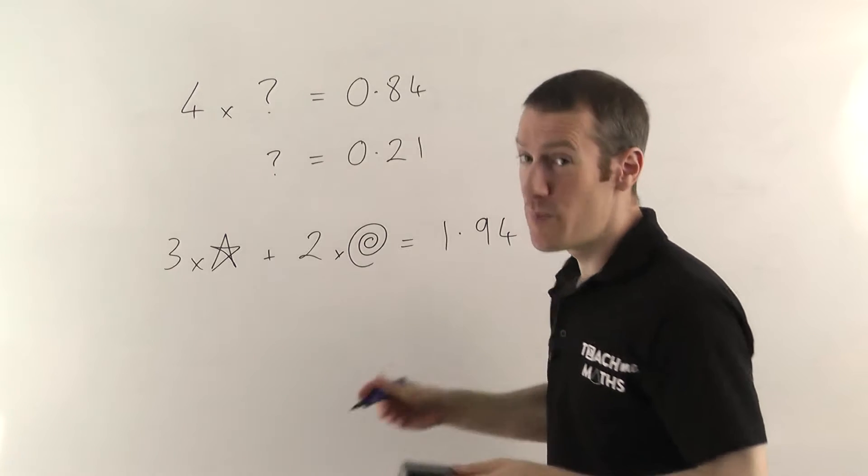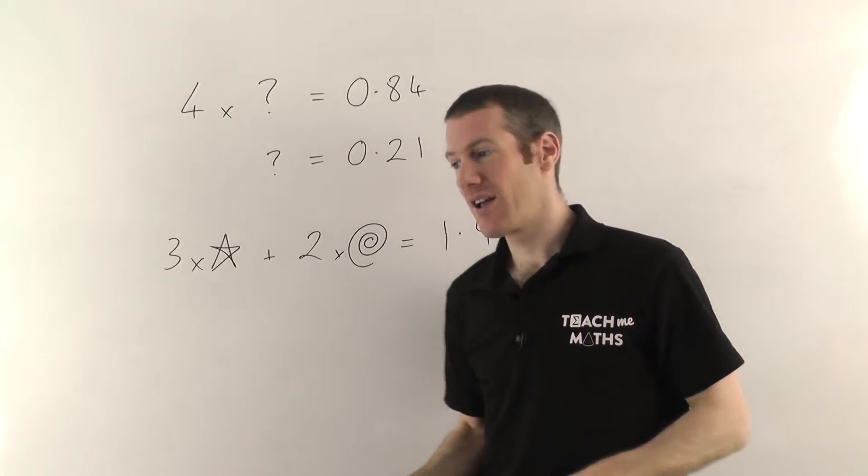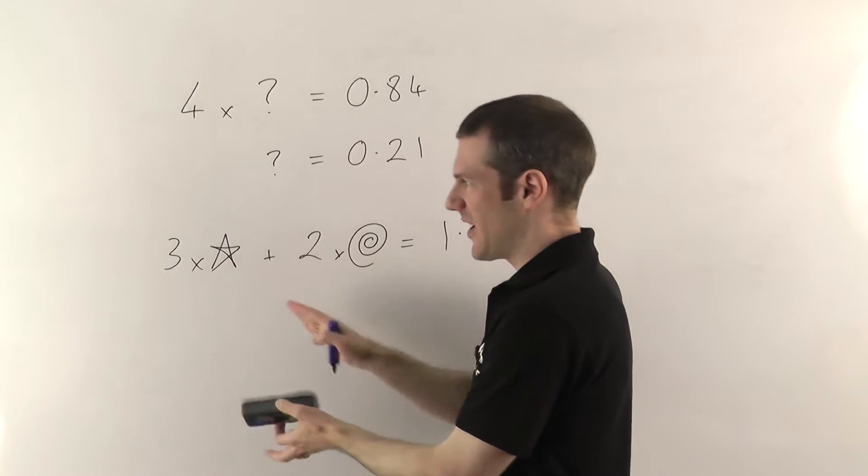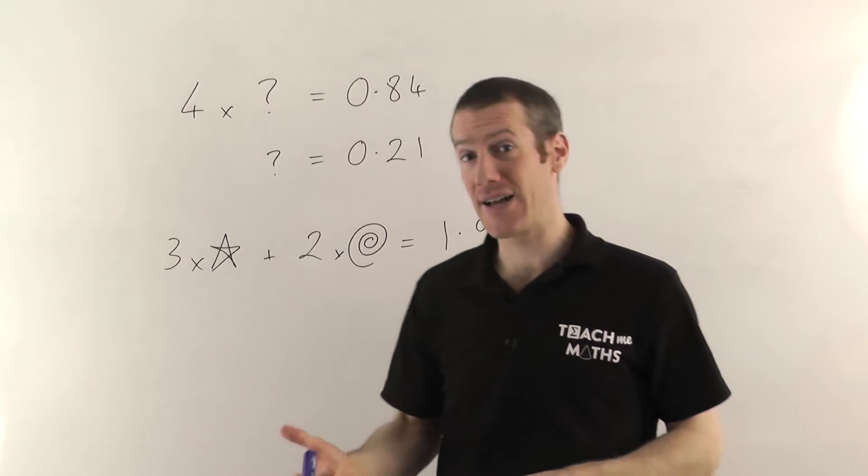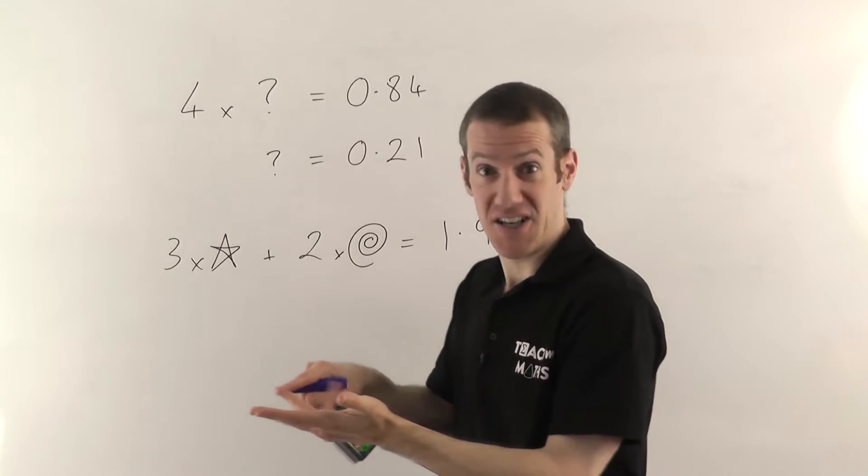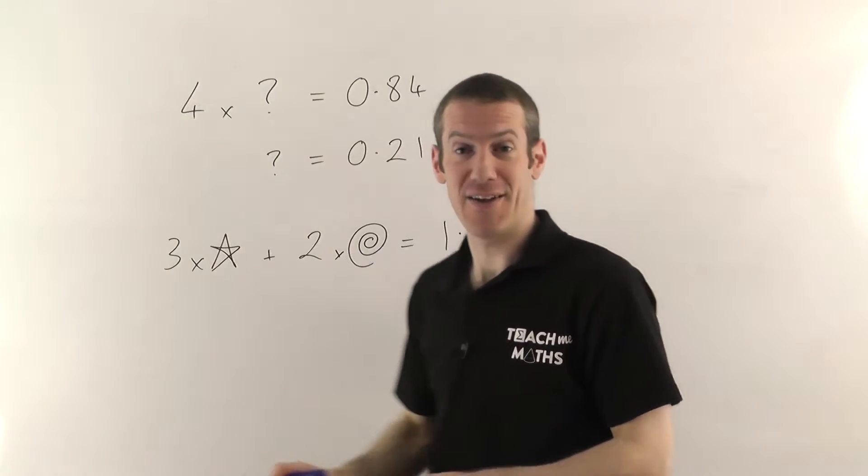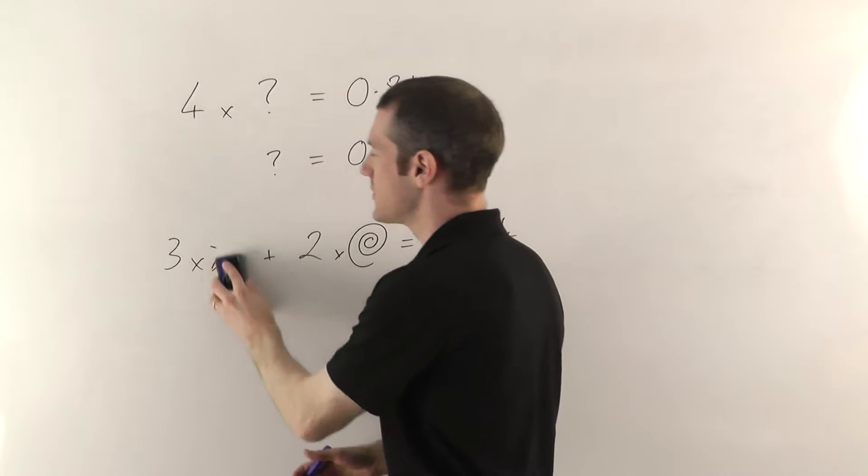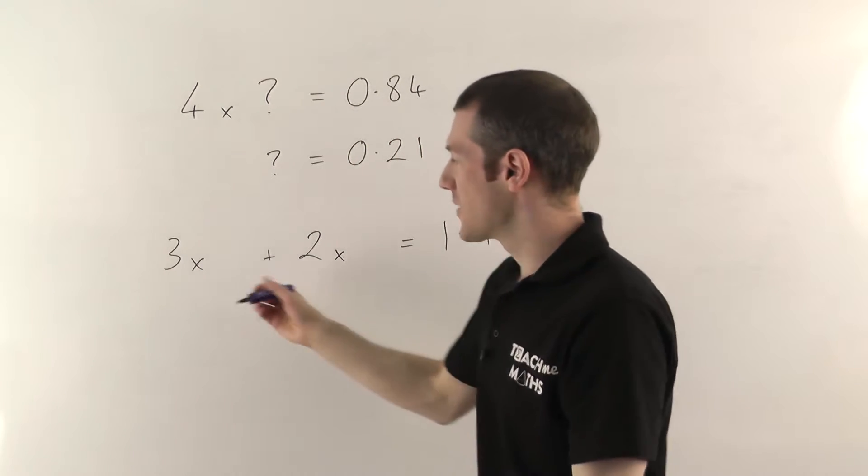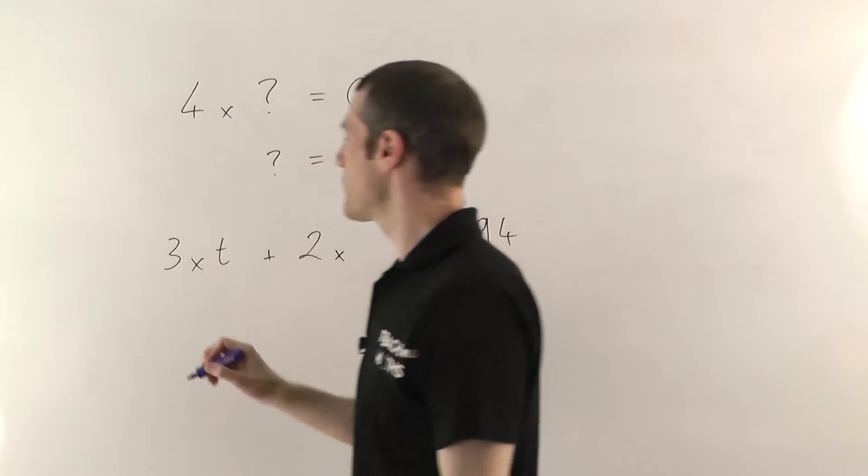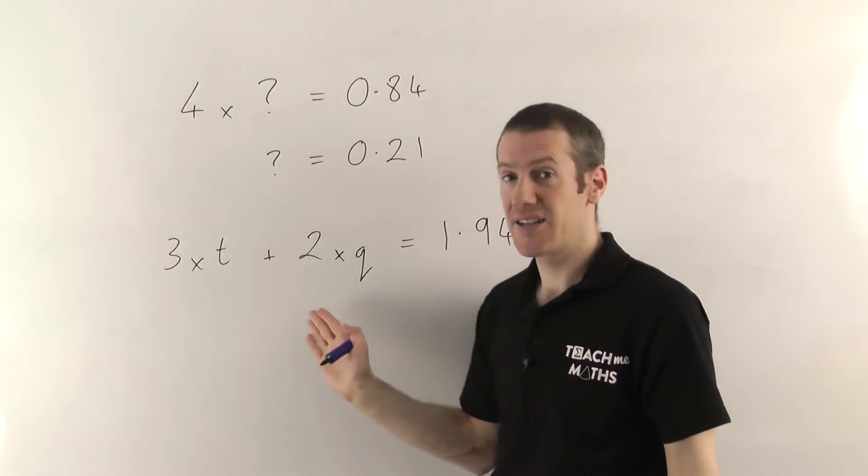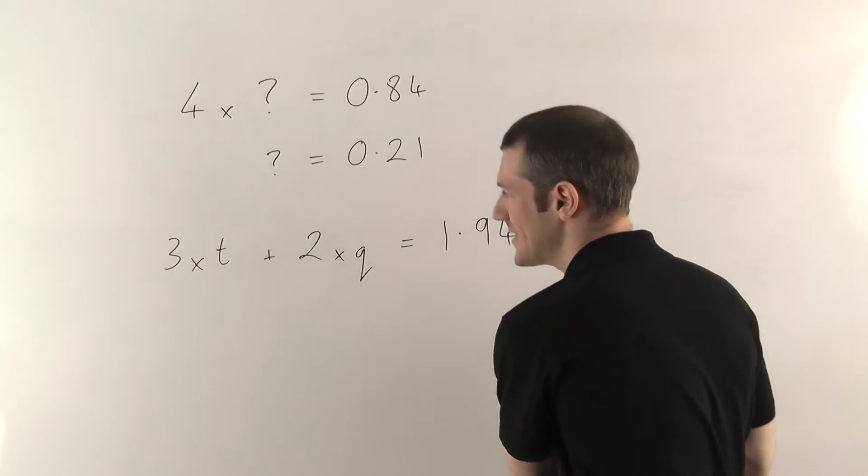So ideally, I want to use different symbols to represent the unknown numbers. And in theory, you could use any symbol you like. You could use a star to represent the price of an apple, and you could use a spiral to represent the price of a banana. It really doesn't matter. But for consistency, and so that everyone understands the kind of symbols we use, and also so we don't have to invent all kinds of crazy symbols, we tend to use letters. Partly because we've got a lot of them. You've got A and B and C and D and E and all the rest of them in the alphabet. So it's very easy to come up with different symbols, because you just pick a different letter.